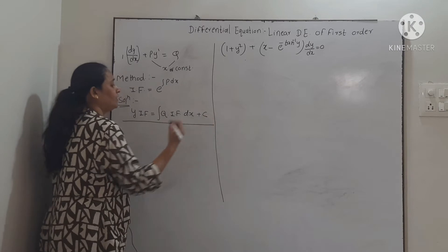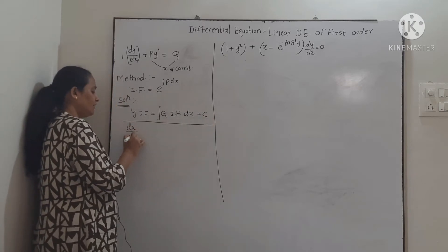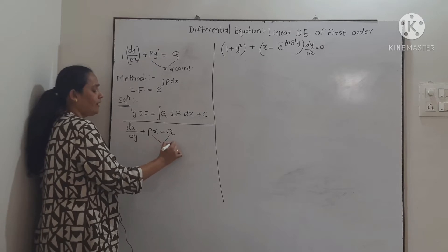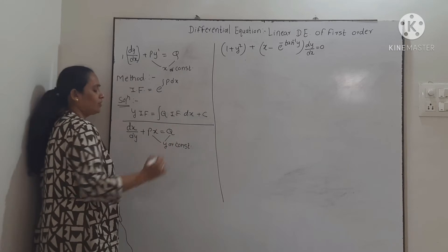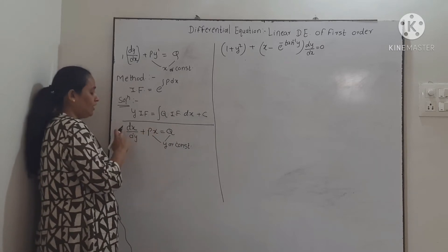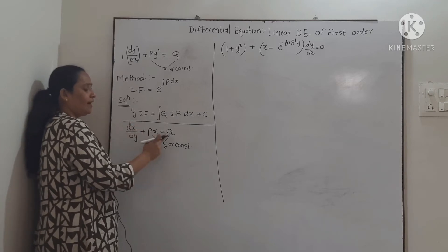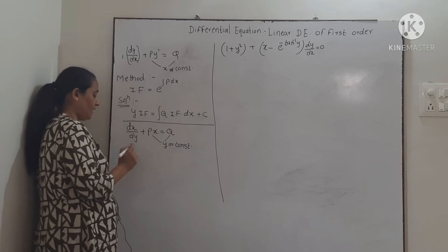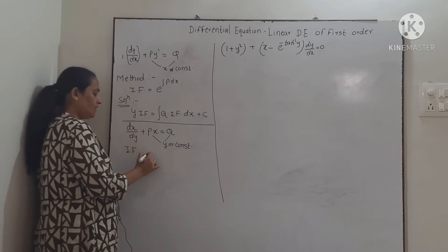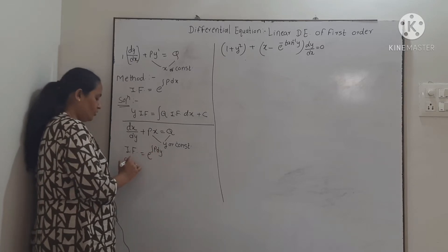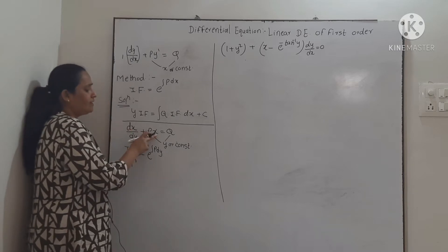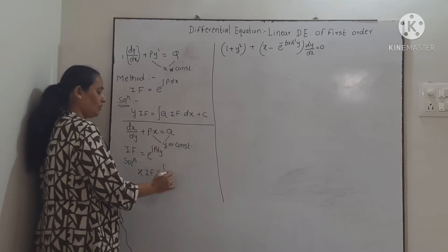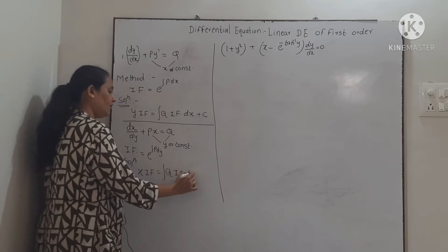This is one type of linear differential equation. Another type is dx/dy + Px = Q, where P and Q are functions of y or constants. The highest power of x is 1, power of dx/dy is 1, coefficient is 1, and on the right-hand side we have a function of the independent variable. This equation is known as linear in x. The integrating factor is e^(∫P dy), and the solution is: x into integrating factor equals the integral of Q into integrating factor dy plus c.